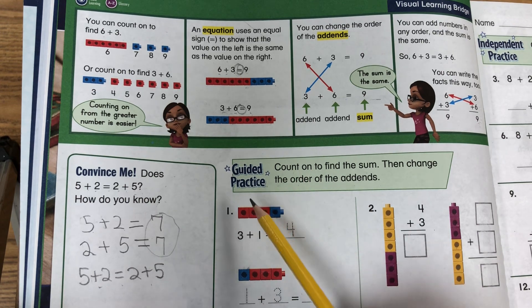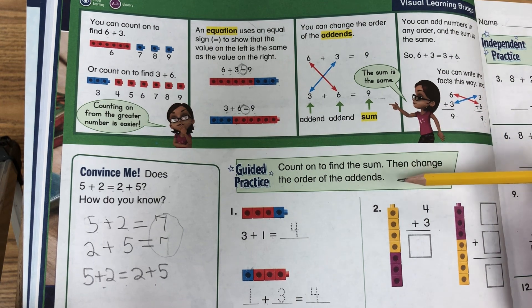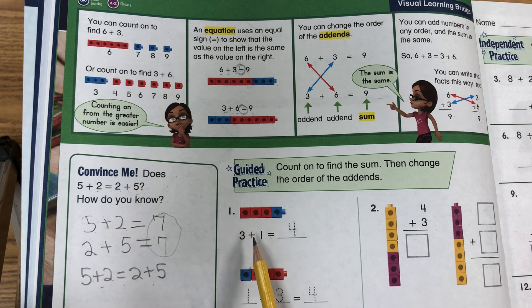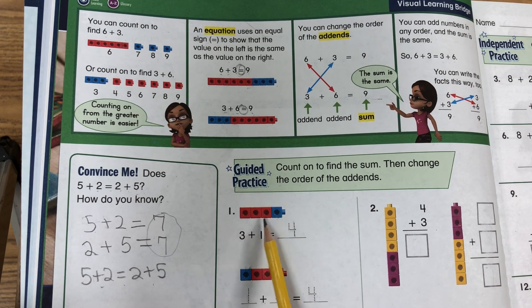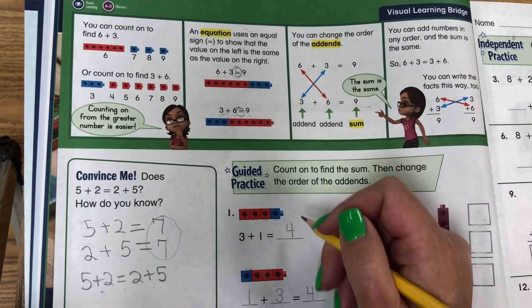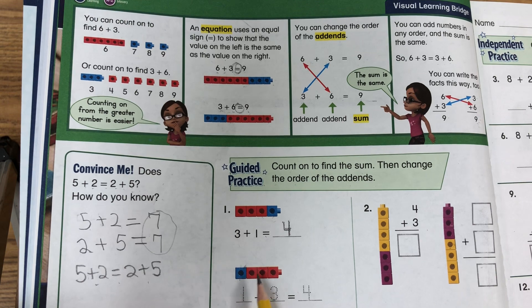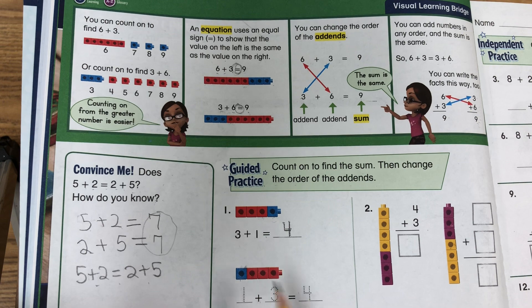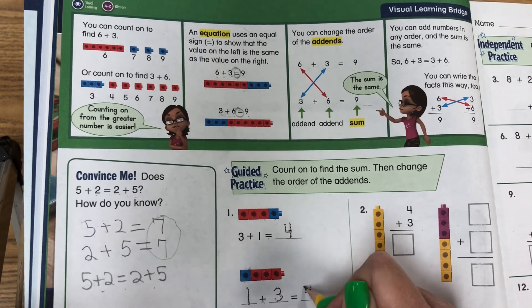Guided practice. Count on to find the sum, then change the order of the addends. Number 1: 3 plus 1. We have 3 reds plus 1 blue. 3, 4 — so I'm going to write my 4. Here's 1 blue and 3 red: 1, 2, 3, 4. 1 plus 3 is 4.